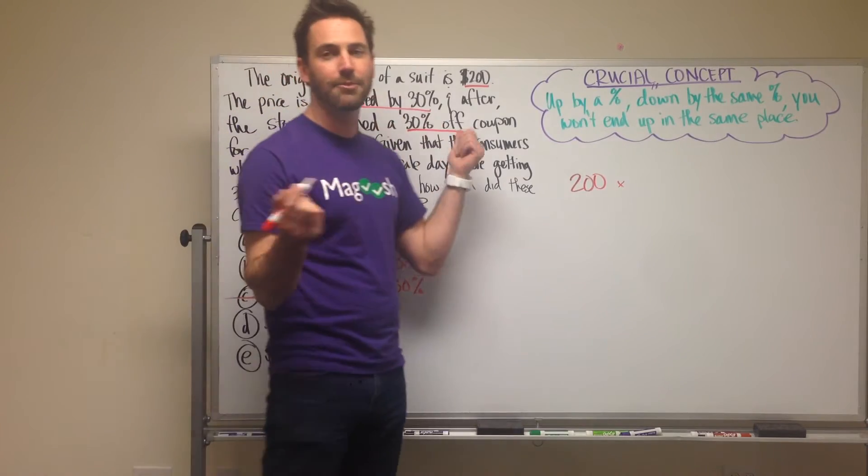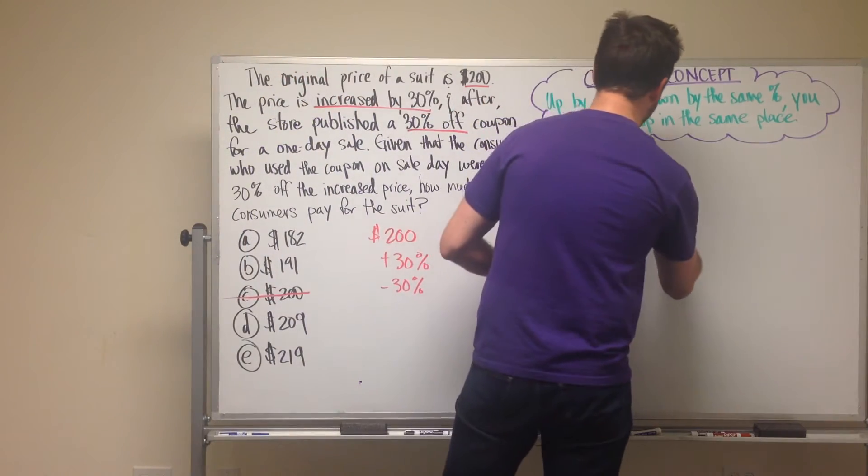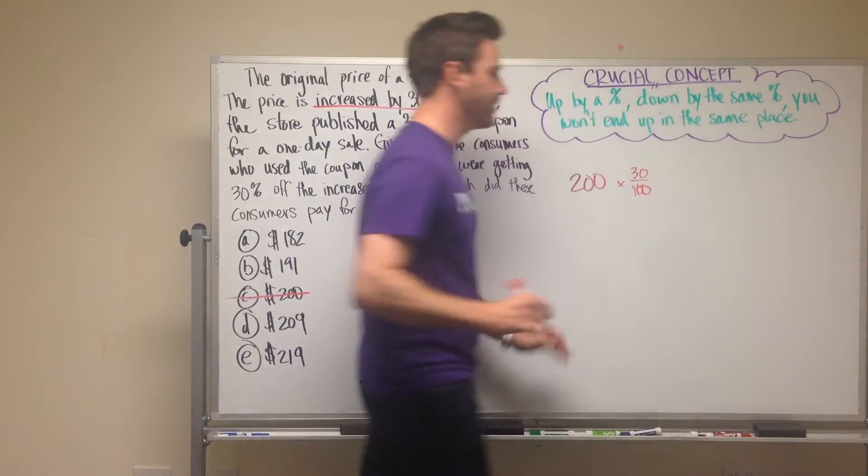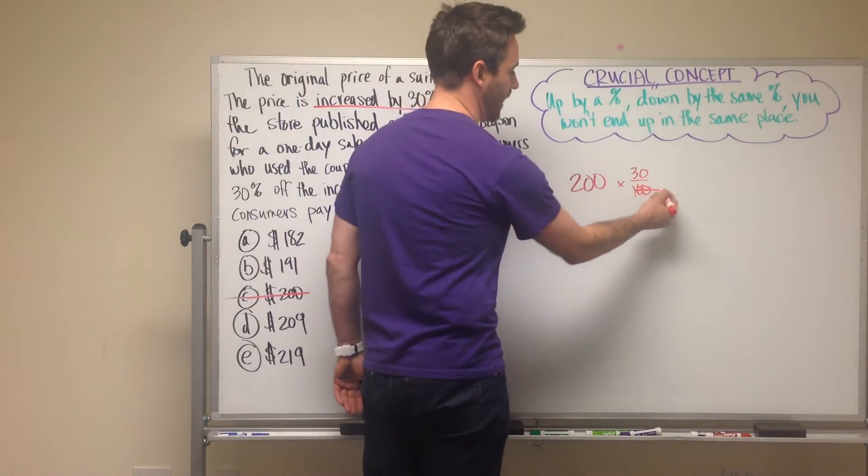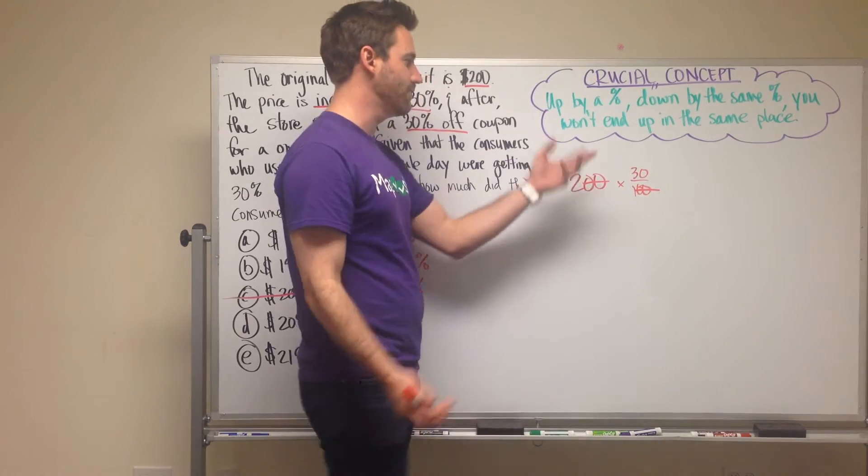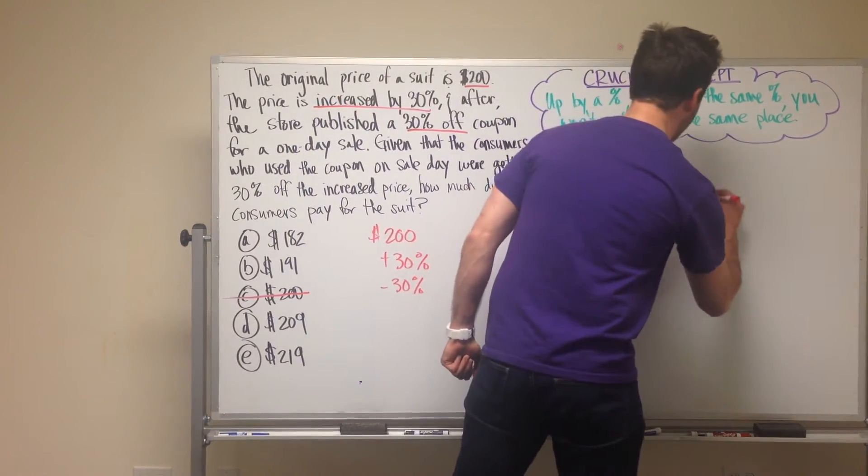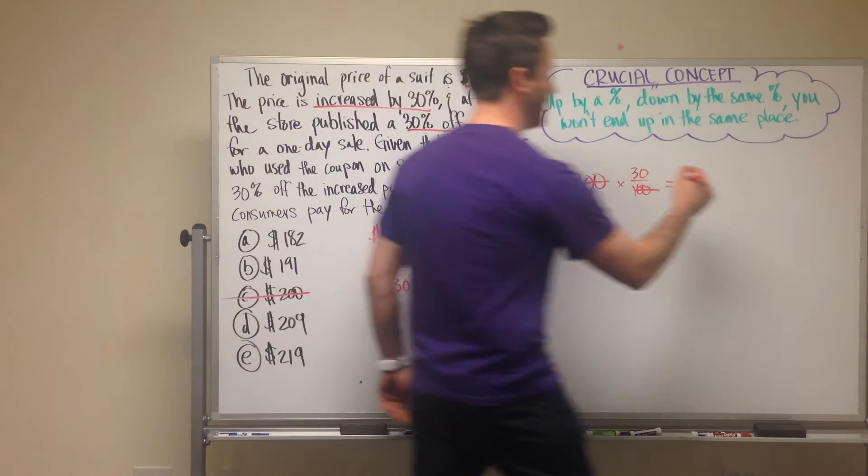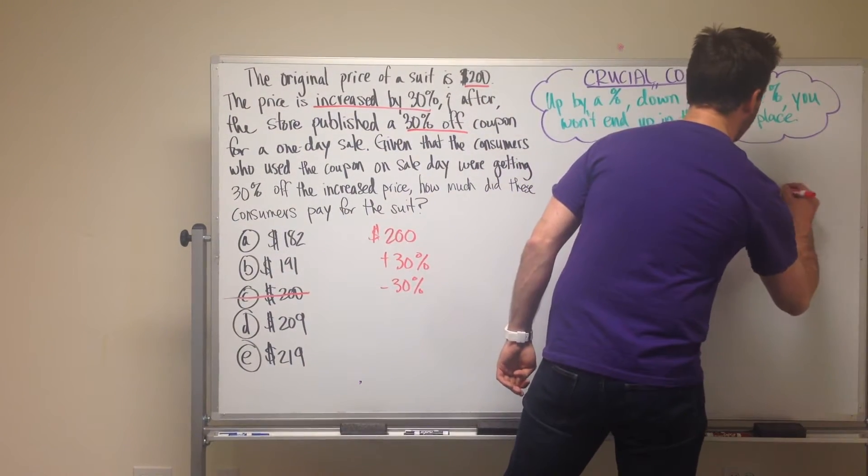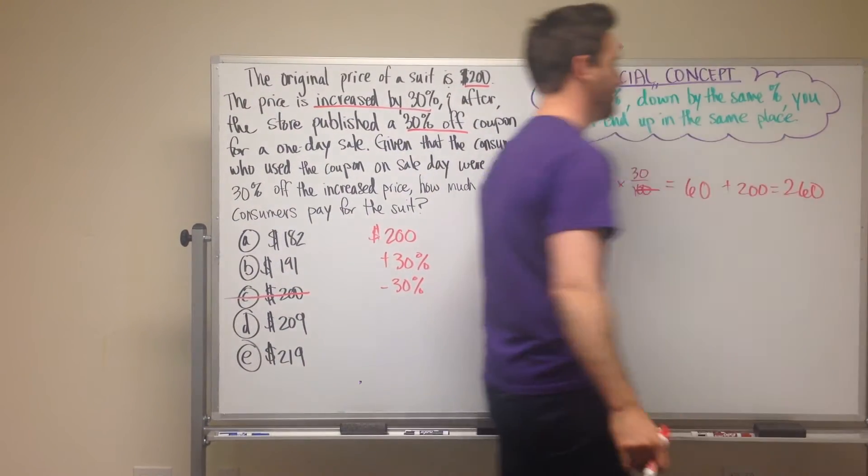So 200 times 30%, or a percent is just per 100, so it's 30 over 100. Then this makes my life pretty easy because I can cancel these hundreds out, and I see 2 times 30 gets 60. Then plus that 200 and I end up with 260.